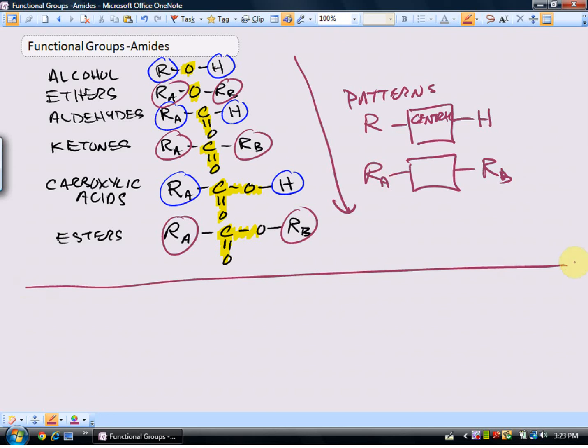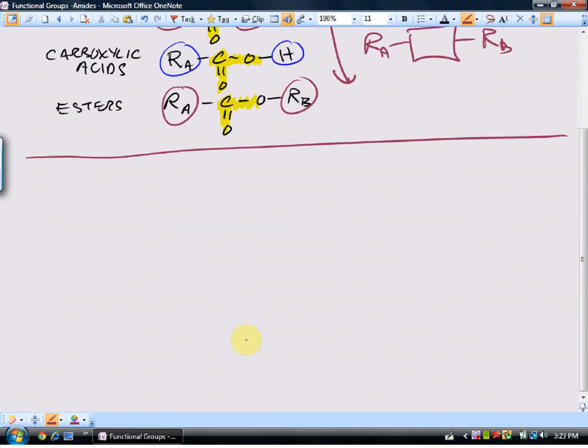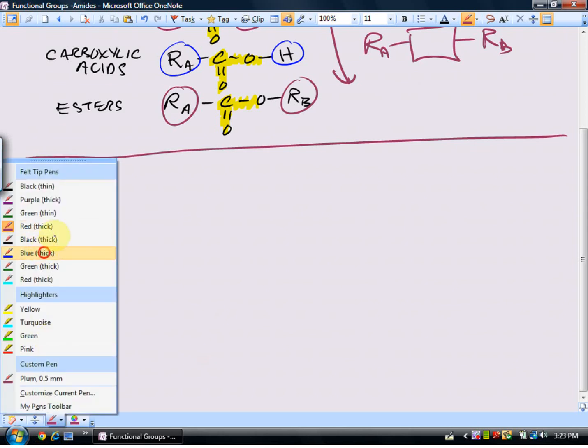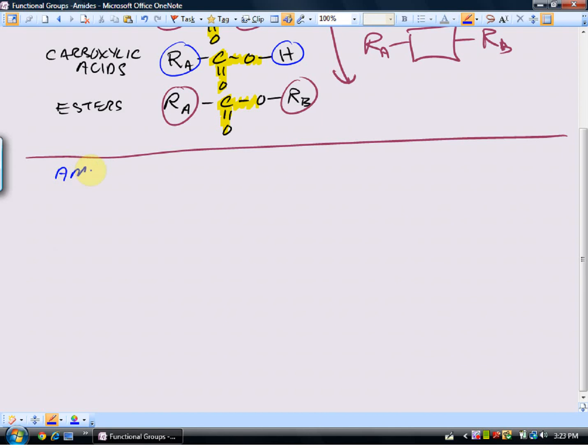Okay, so now our last functional group, really important functional group in biological systems, particularly in protein molecules. And this functional group is called the amide group, depending upon how you want to pronounce it. The amide group contains both oxygen and nitrogen, and here's what it looks like.